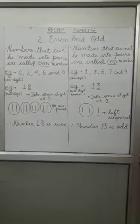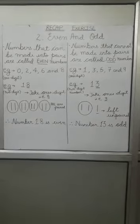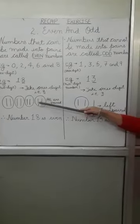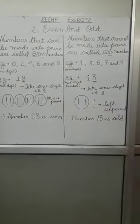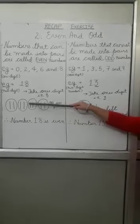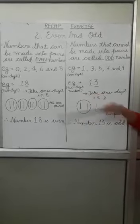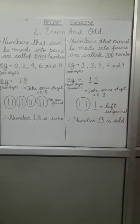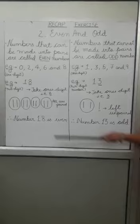First write the digit of one's place that is 8. Then draw lines to represent the digit 1, 2, 3, 4, 5, 6, 7, 8. Now make them into pairs. 1, 2, 3, 4. See, no line is left unpaired. Therefore, the number 18 is even.